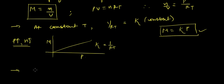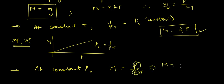What happens at constant pressure? Molarity is P upon RT. So at constant pressure, P and R are constant, so molarity would be a constant upon T, or rather let me write it as K' upon T.